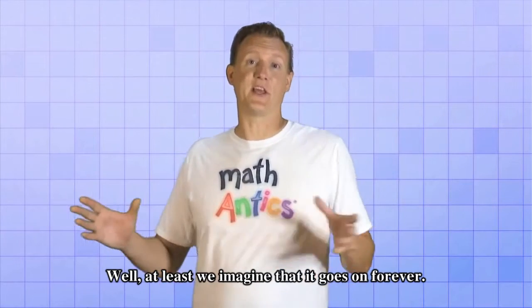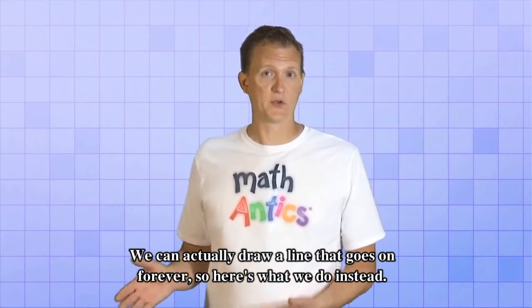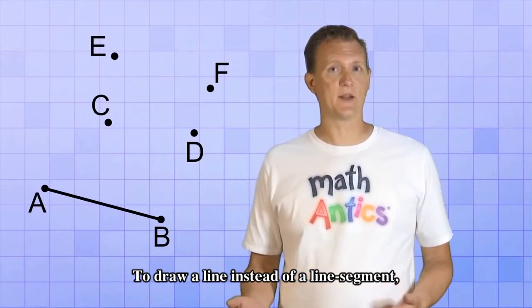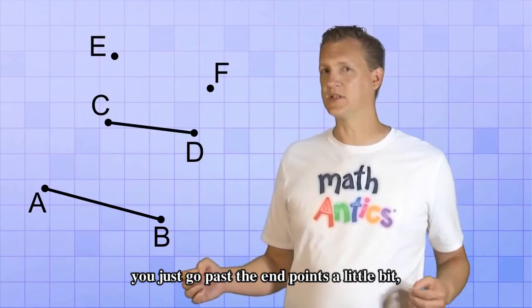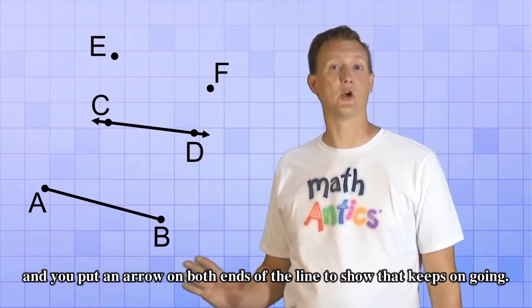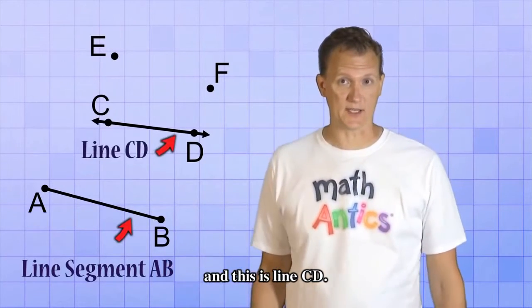Well, at least we imagine that it goes on forever. We can't actually draw a line that goes on forever. So here's what we do instead. To draw a line instead of a line segment, you just go past the endpoints a little bit and you put an arrow on both ends of the line to show that it keeps on going. So this is Line Segment AB, and this is Line CD.